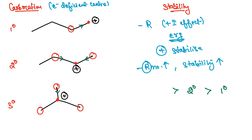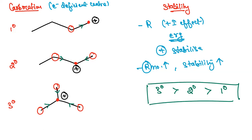In the case of tertiary, there are three alkyl groups stabilizing the carbocation. So the stability order is the same for carbocations and also for free radicals — tertiary is the most stable, followed by secondary, then primary.